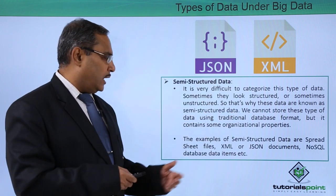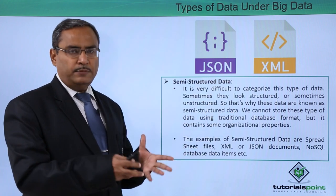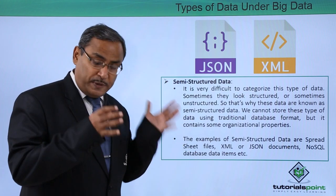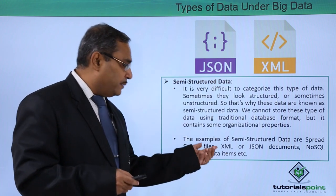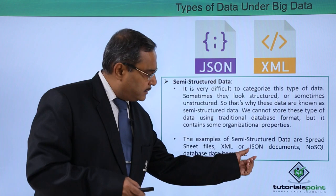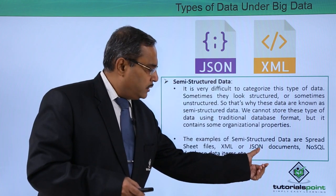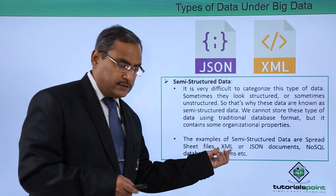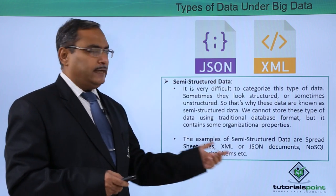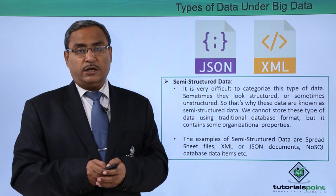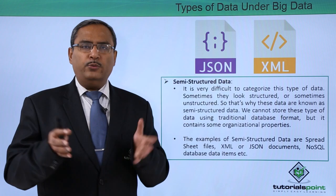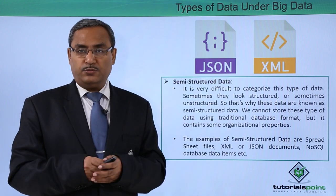Examples of semi-structured data are spreadsheet files such as those in Excel or Calc. XML — eXtensible Markup Language — and JSON (JavaScript Object Notation) documents are also semi-structured data. NoSQL databases are data items that also fall under this category, as NoSQL is a kind of database where we can keep this type of data in a very efficient way.